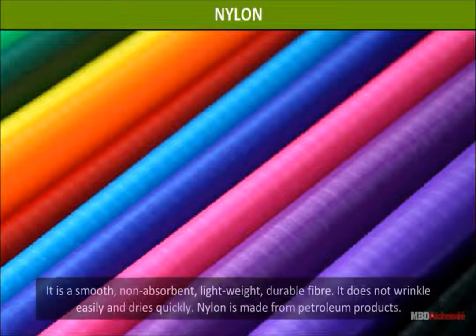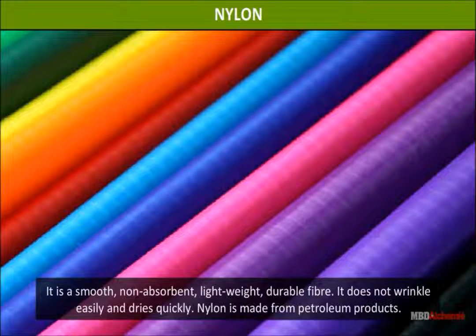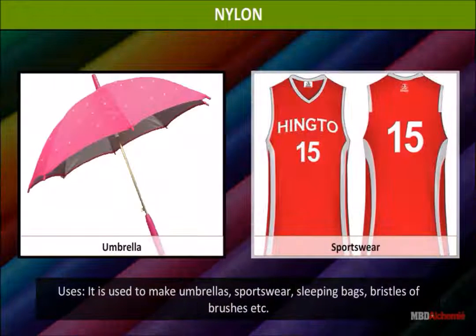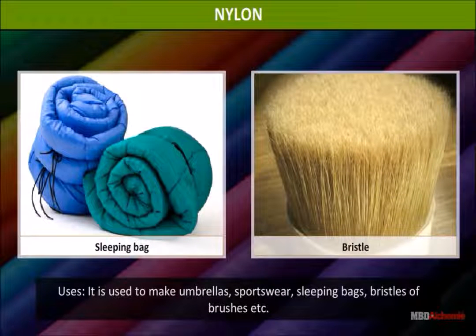Nylon: Nylon is a smooth, non-absorbent, lightweight, and durable fiber. It does not wrinkle easily and dries quickly. Nylon is made from petroleum products. Uses: it is used to make umbrellas, sportswear, tents, luggage, sleeping bags, and bristles of brushes.